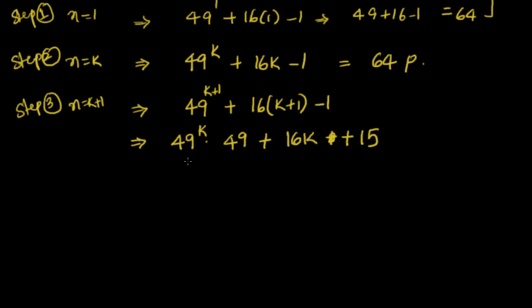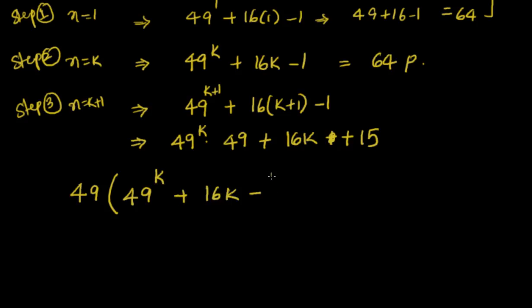The whole idea is now to convert this as a multiple of the n equal to k expression, because we have already assumed n equal to k is nothing but 64 into p. So what I will do now is multiply the n equal to k expression by 49 so that I can equate the first term. The n equal to k expression is 49 to the power of k plus 16k minus 1, and this is nothing but equal to 64 into p.